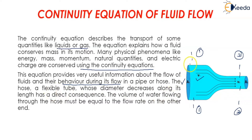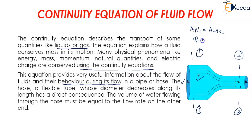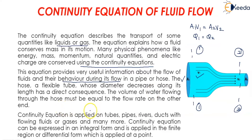The hose is a flexible tube whose diameter decreases along its length, and we can see that the diameter is decreasing along its length. The volume of water flowing through a hose must be equal to the flow rate on the other end — that is, a1 times v1 should be equal to a2 times v2. The continuity equation is applied on tubes, pipes, rivers, and ducts with flowing fluid or gases.